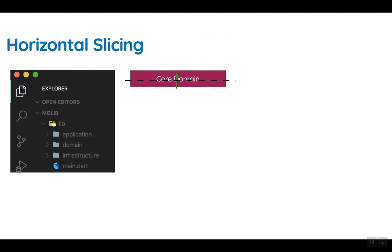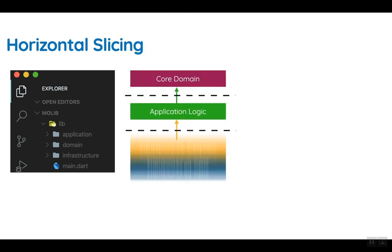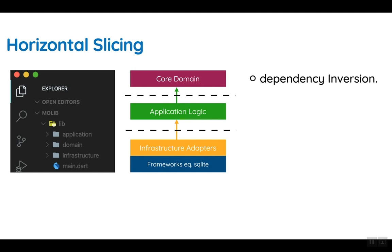Let us look at horizontal slicing — what it is and how it can improve the way we structure our application. Horizontal slicing is where the project is organized by breaking the application into horizontal layers, and those layers' dependencies are managed using the dependency inversion principle. Often times the application is broken down into your core domain, your application logic, and your infrastructure adapters where your frameworks are implemented or used.